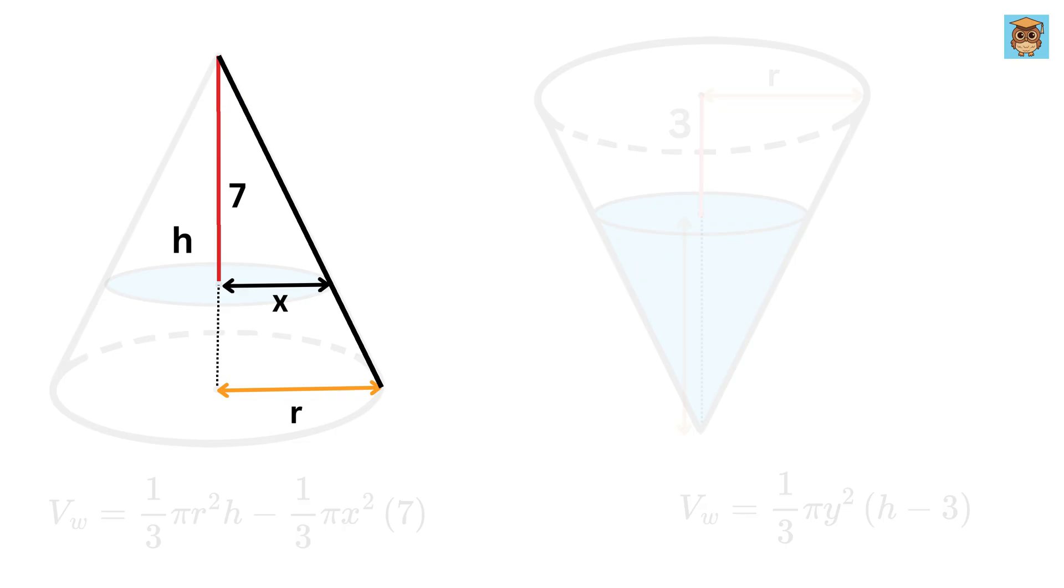Therefore, we can say that this side or X by this side or R is equal to this side or 7 by this side or H. Thus, we get X equals 7R over H.